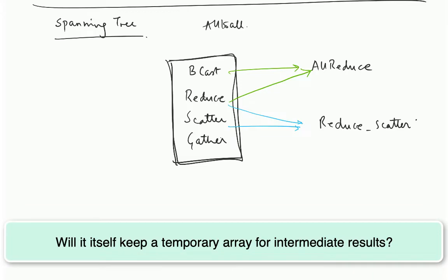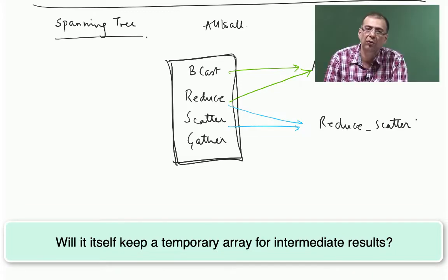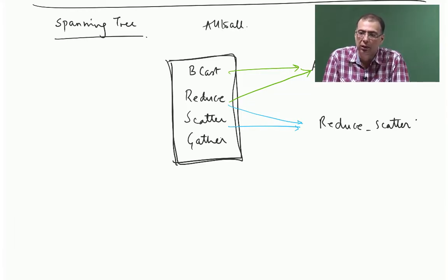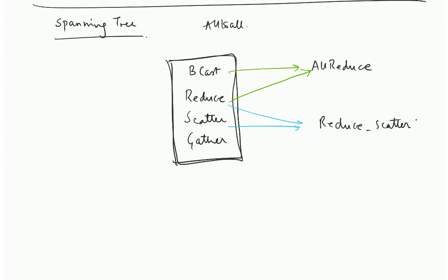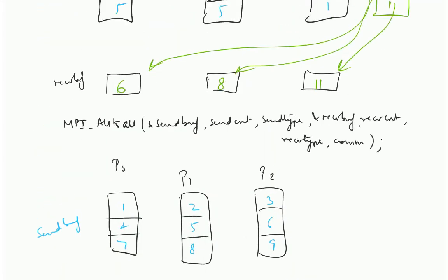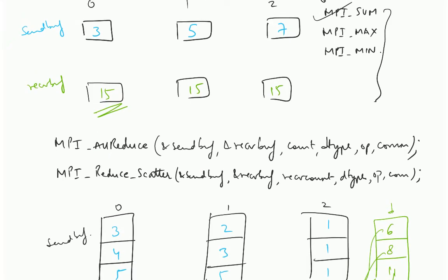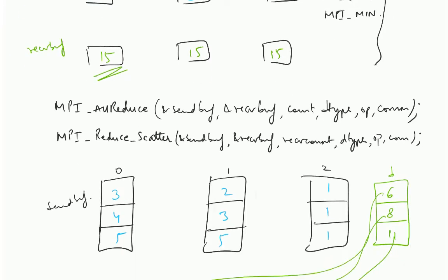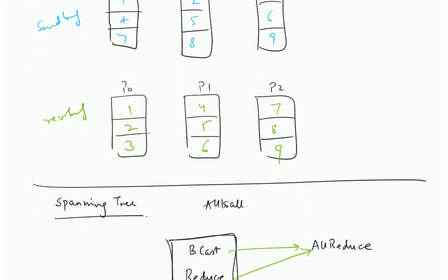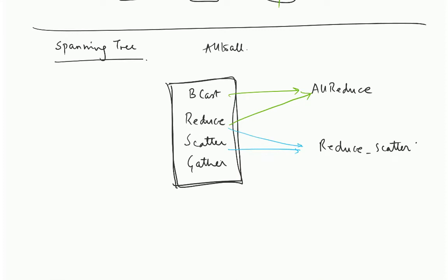A student asks: does it allocate a temporary buffer for the implementation of reduce-scatter? As far as you are concerned, we spoke about the interface — the reduce-scatter API. Anything over and above that which MPI needs internally, MPI has to allocate and take care of itself. That is not the user's problem — you do not have to worry about that.